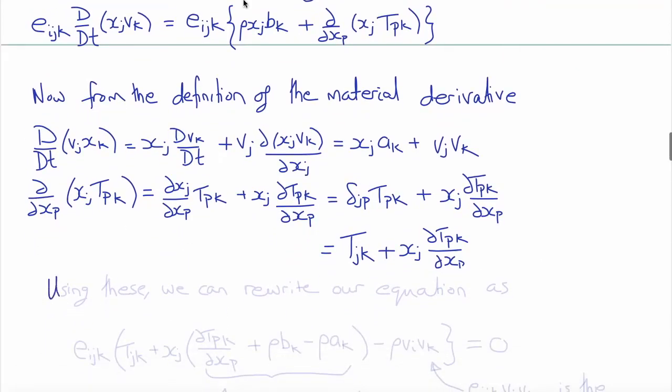So now using these two expressions, we can substitute them into our expression above, like Eijk outside of everything, and we get Eijk times TjK plus XJ times del TpK del XP plus Rho XJ BK minus Rho XJ AK.